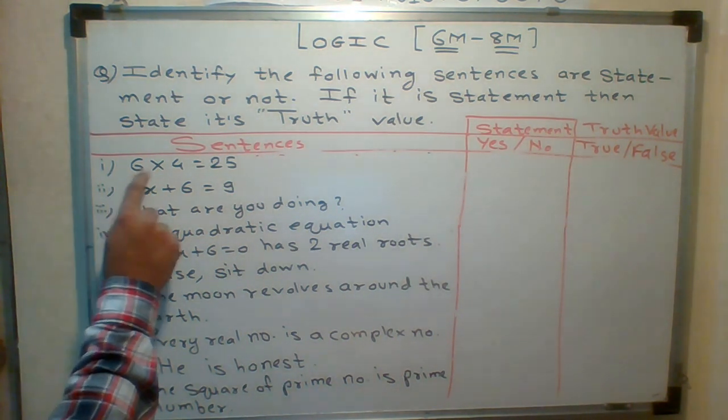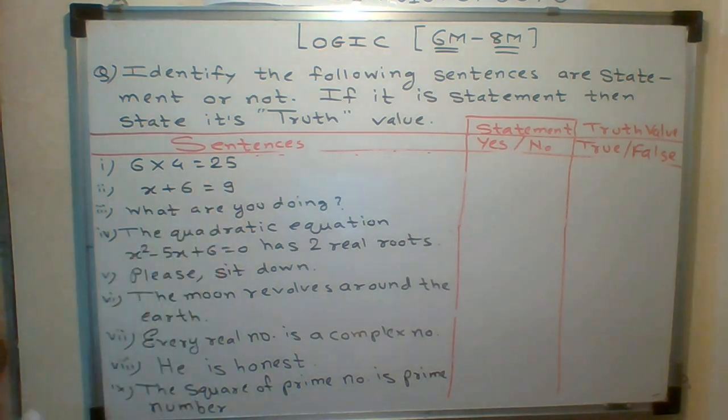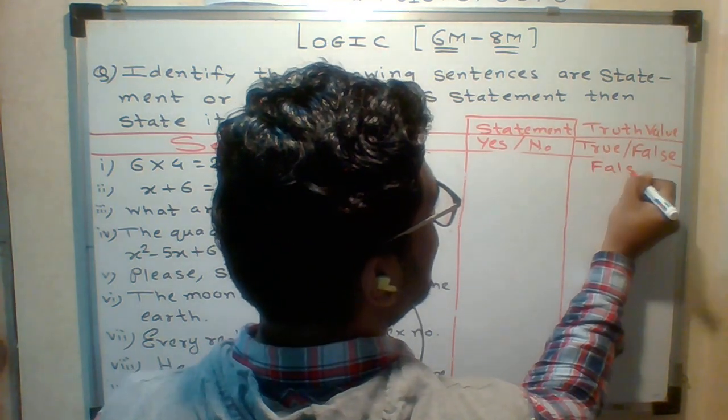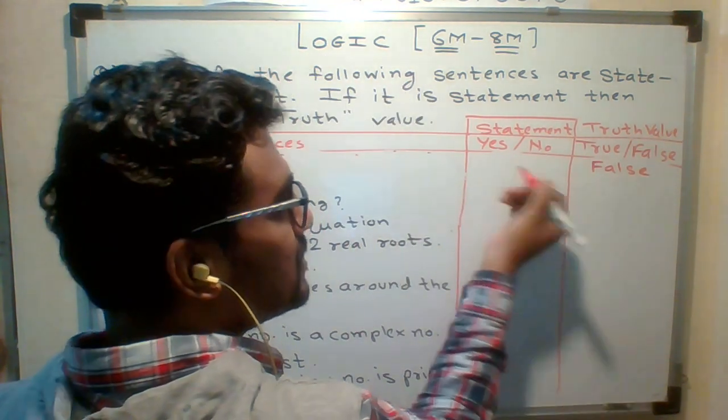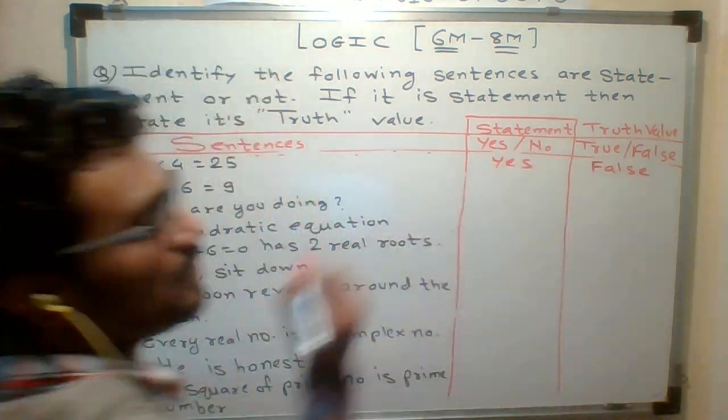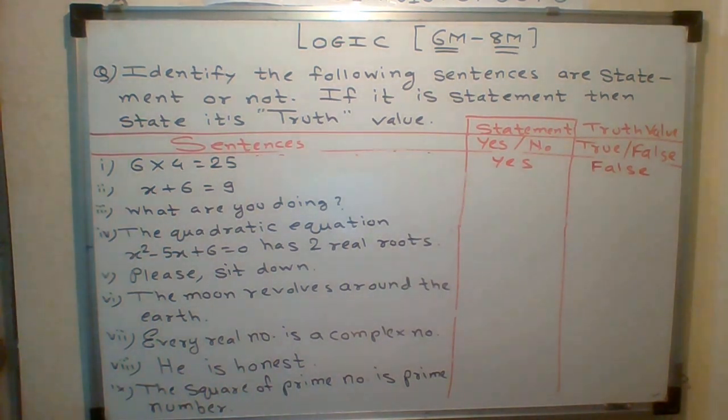So as we observe, 6 x 4 is equal to 25. What will be your answer? Your answer definitely is a false sentence. Since it is a false sentence, it is yes, it is a statement. Either it is false or true, your statement will be yes.